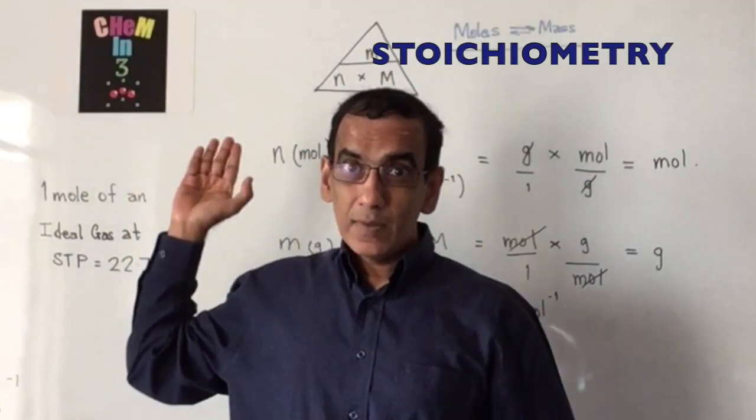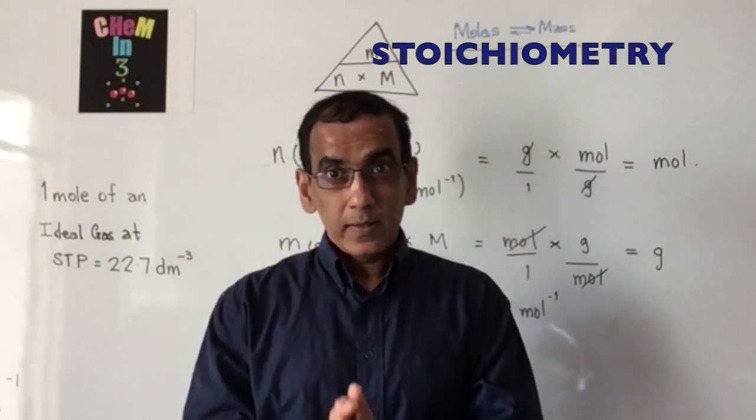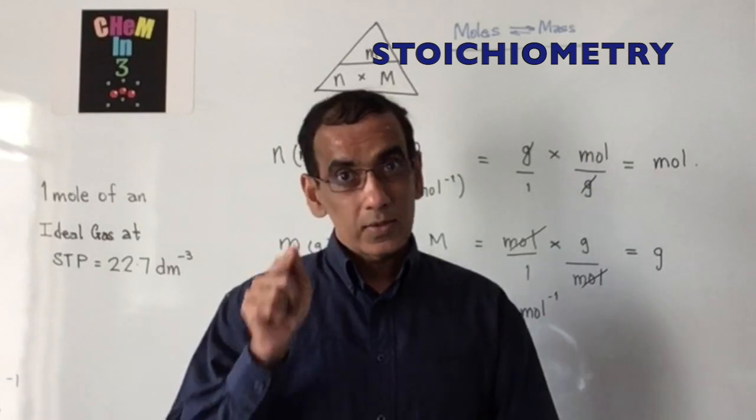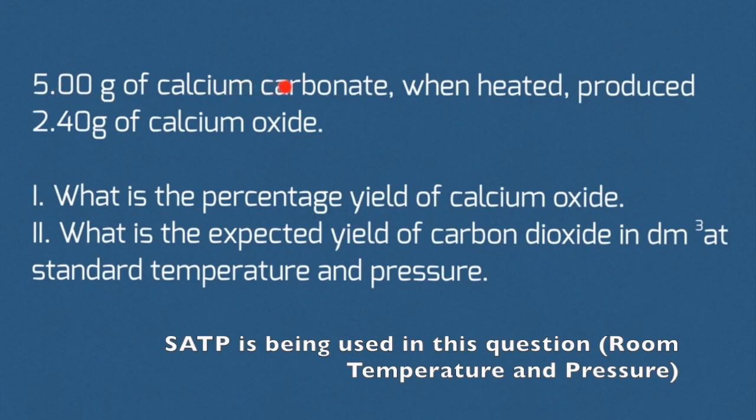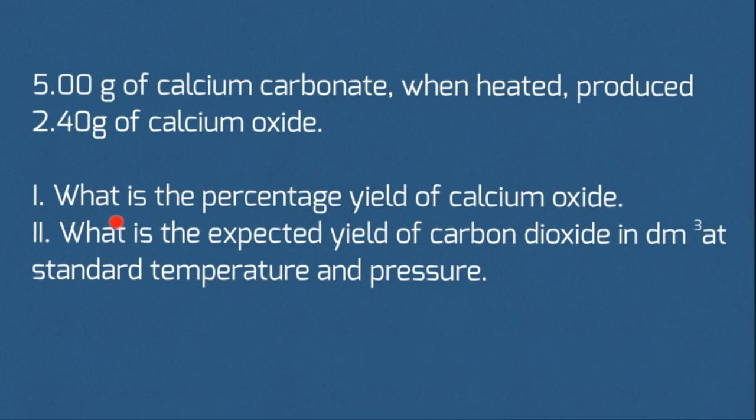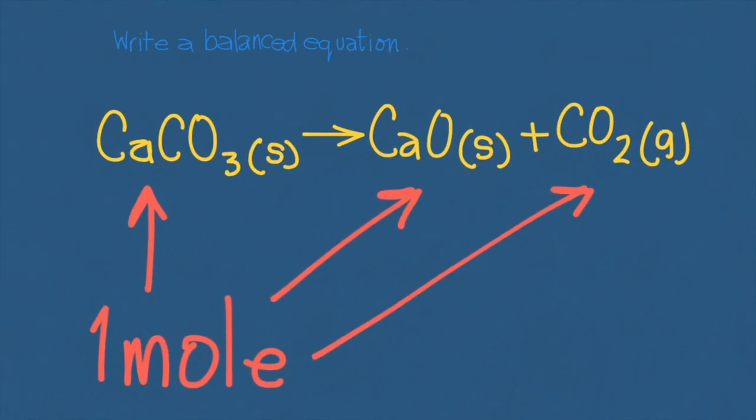Hello and welcome again to CAMM3. Let's move in and take a look at today's stoichiometry problem. Five grams of calcium carbonate when heated produced 2.40 grams of calcium oxide, a typical decomposition reaction. What is the percentage of calcium oxide produced and what is the expected yield of carbon dioxide in dm³ at standard temperature and pressure?